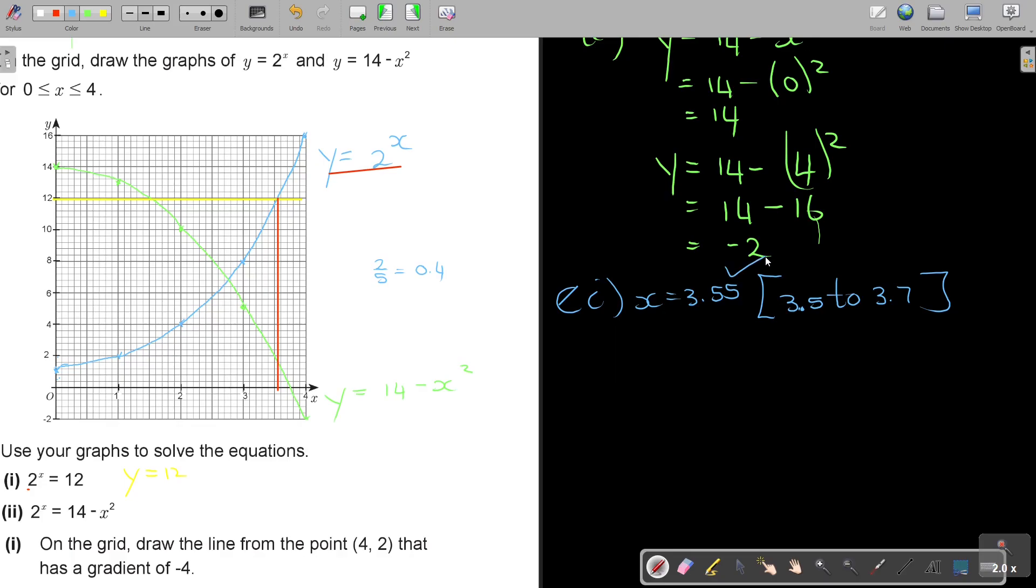Now this is saying where the blue graph is intersecting with the green graph. Usually I use dotted lines, but you can just use a ruler and read it down. So basically, if I'm looking here, then it's going to be 2.8, 2.75, but this is 2.8. So I will say x is 2.8, and they said in the exam report 2.65 to 2.8, so I was on that end.